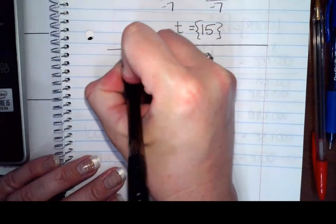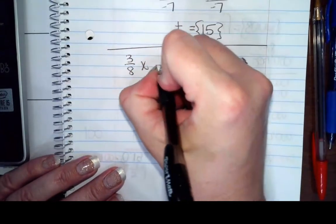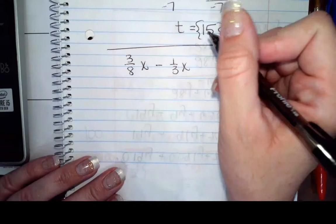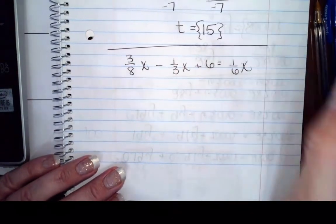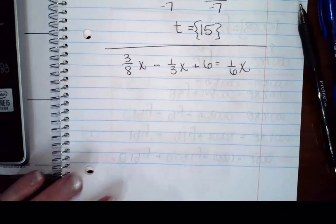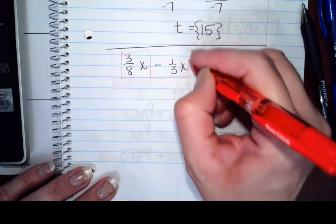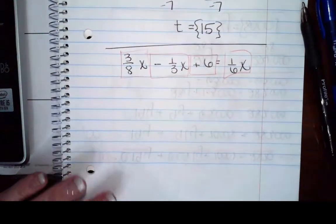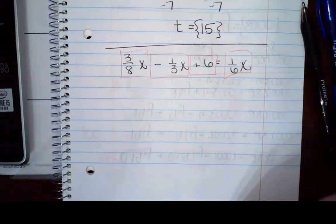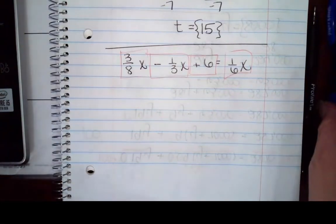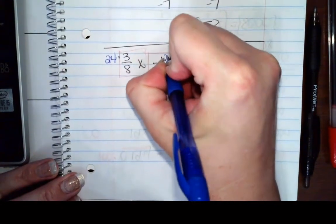Last batch of practice. We've got three-eighths x minus one-third x plus six equals one-sixth x. So I have one term here, one term here, one term here, and one term here. If I needed a common denominator, what would it be? It would be 24. So that's actually the least common multiple. I'm going to multiply through by 24 to all four terms.